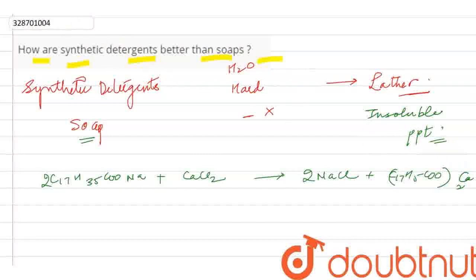It is calcium C17H35COO, and this is insoluble. Okay. So this is insoluble calcium and magnesium salt.